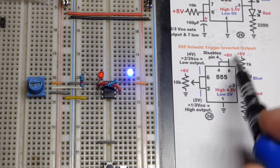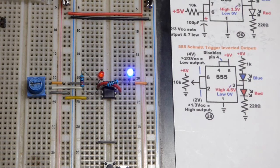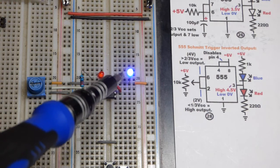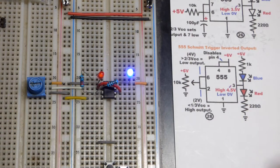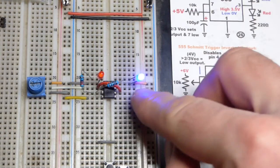So it's a Schmidt trigger inverter. Right now the output is low just because that's the way I wired it up. The blue LED is lit up.